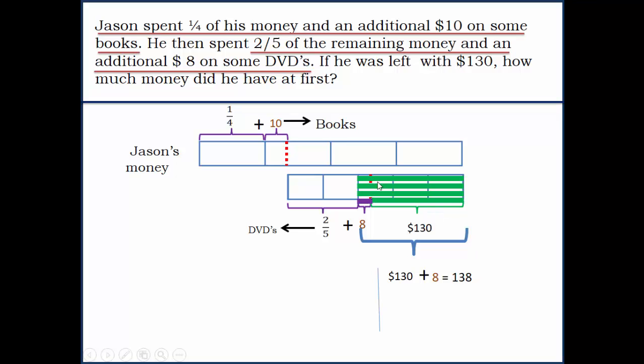We know it represents three units, so three units equals 138. One unit is 138 divided by 3, which gives us 46. So one unit here is $46.